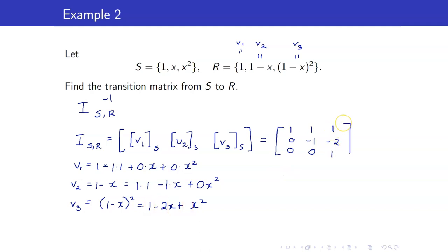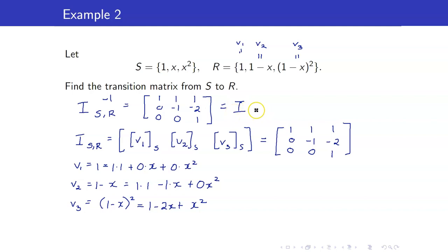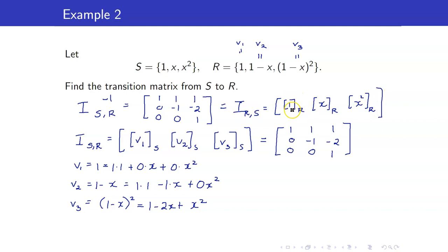We record the coefficients of 1, x, and x². So the coordinate vector of V1 is [1, 0, 0], of V2 is [1, −1, 0], and of V3 is [1, −2, 1]. Now verify that when you get the inverse of this matrix, it is also equal to itself — meaning the matrix is its own inverse. This equals the transition matrix from S to R, whose columns are the coordinate vectors of the elements of S relative to R. Verification: 1 equals 1 times V1 + 0 times V2 + 0 times V3. Correct.